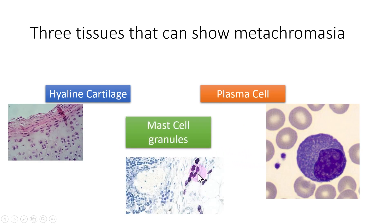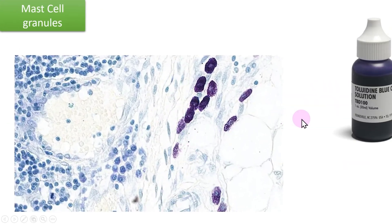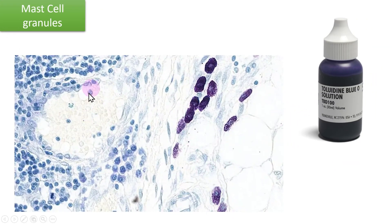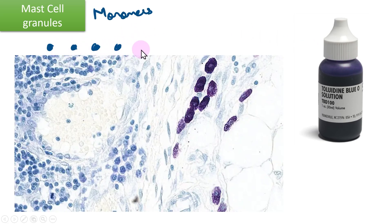Now let us take a deeper dive into what is the reason why these tissues show different colors when stained with toluidine blue. If toluidine blue stain is used in this tissue, most of the regions will take a blue stain as you can see here, because the toluidine blue dye molecules will remain as monomers, and that is called orthochromasia — meaning it will take the original blue color which is the color of the dye used.